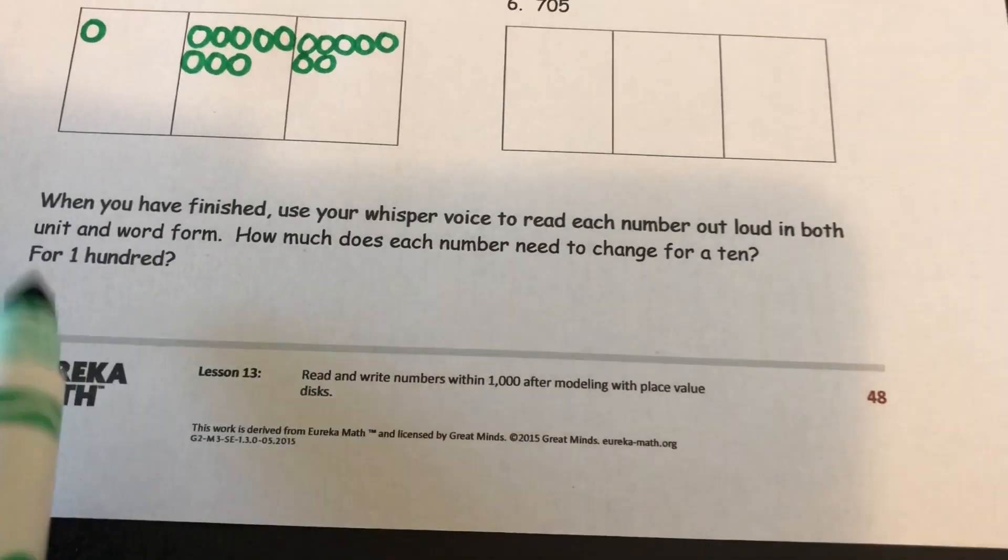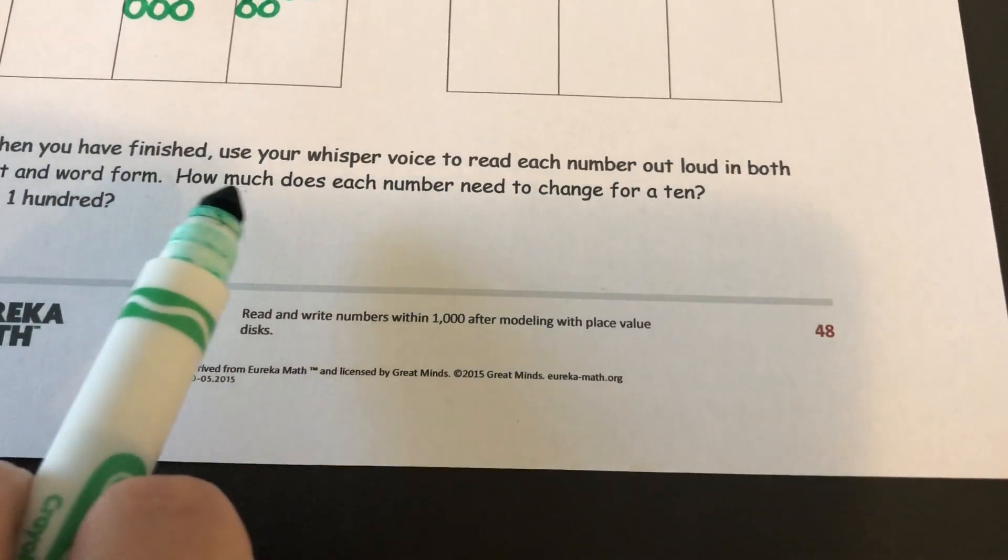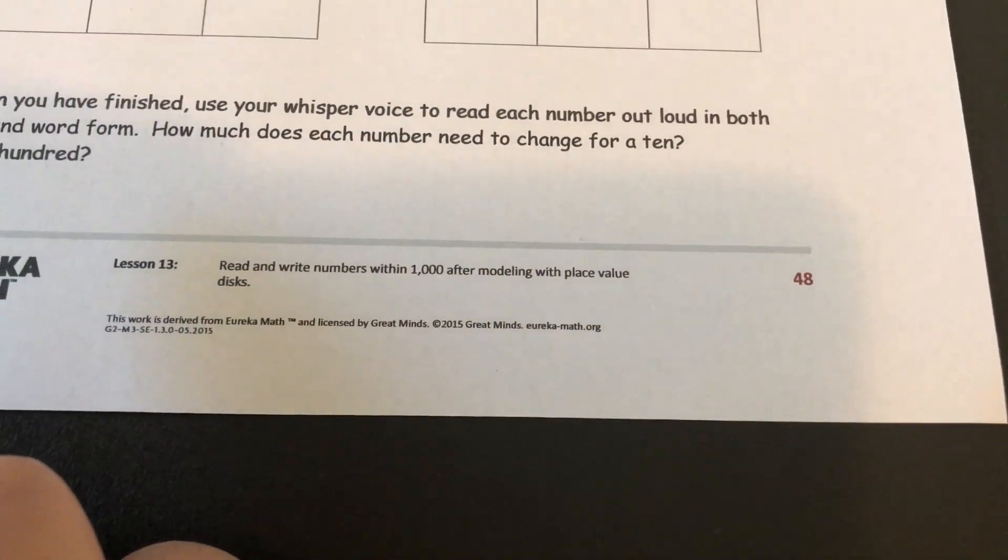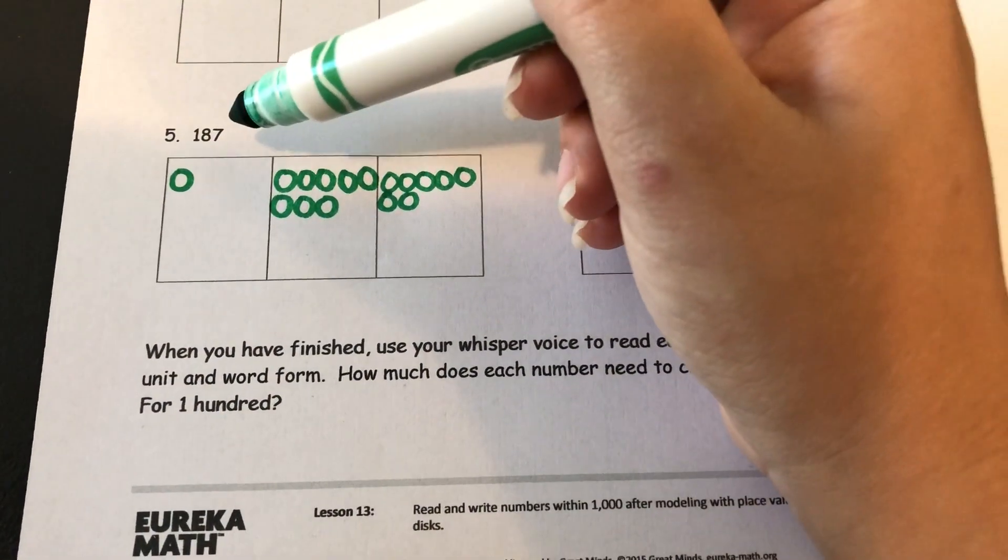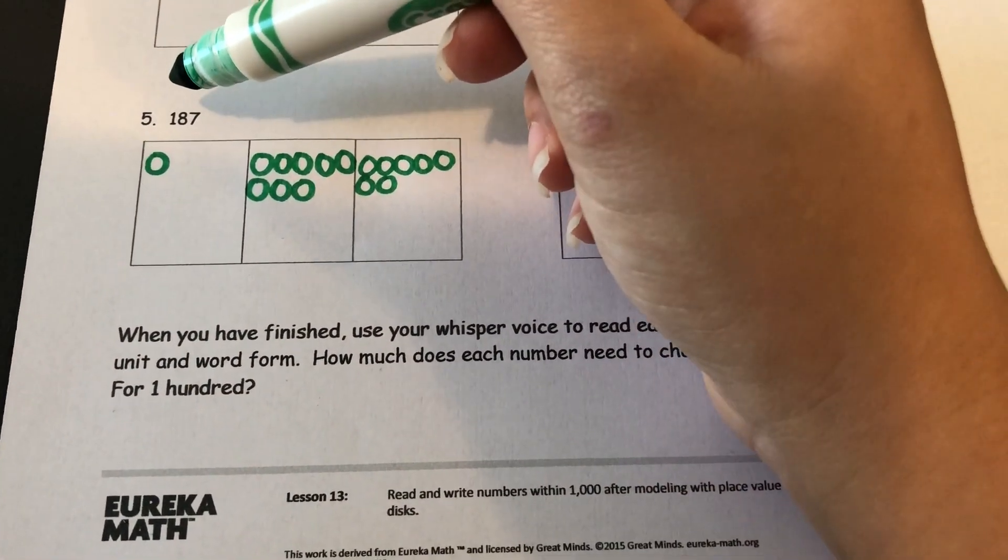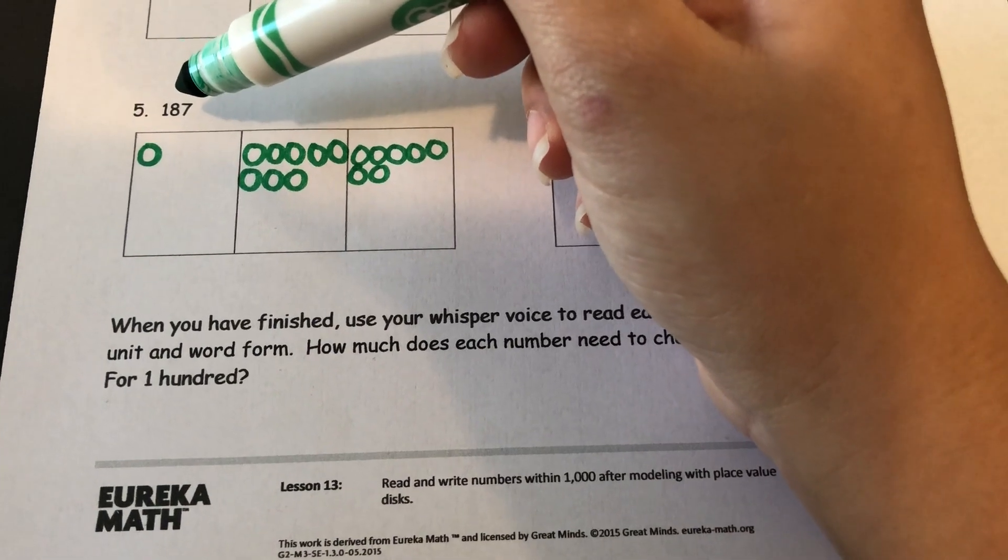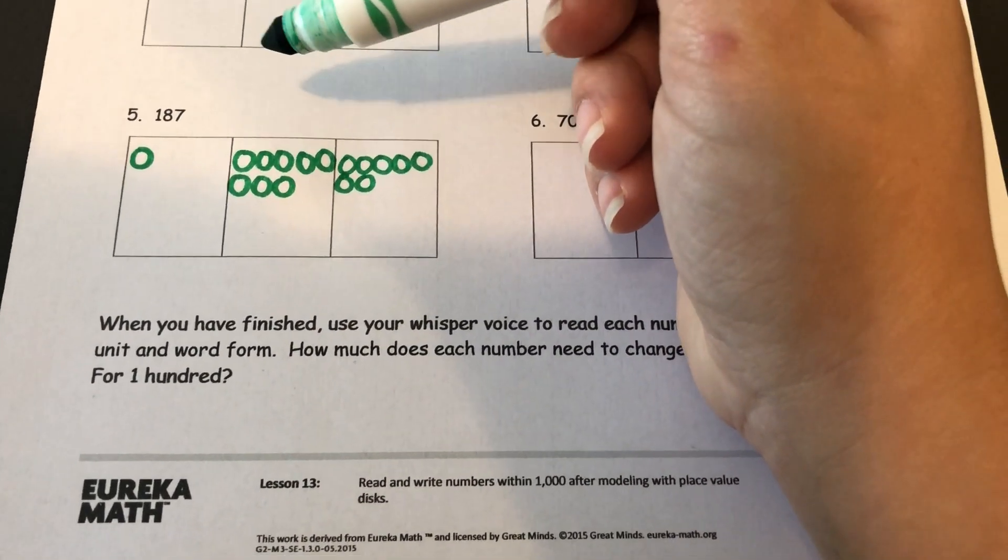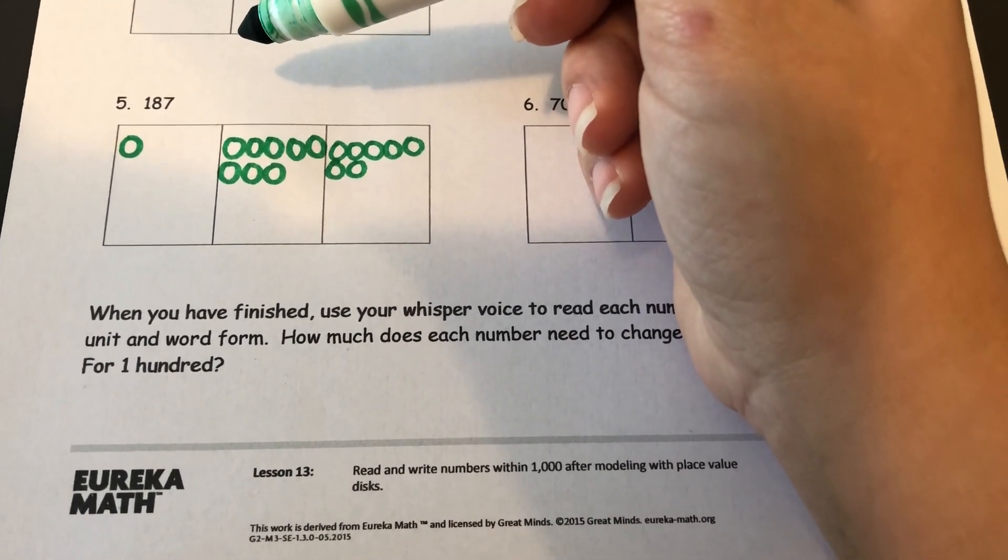Then you'll get to the bottom and it says when you have finished use your whisper voice to read each number out loud in both unit and word form. Alright so this number in unit form is 1 hundred, 8 tens, 7 ones. In word form it is 187.